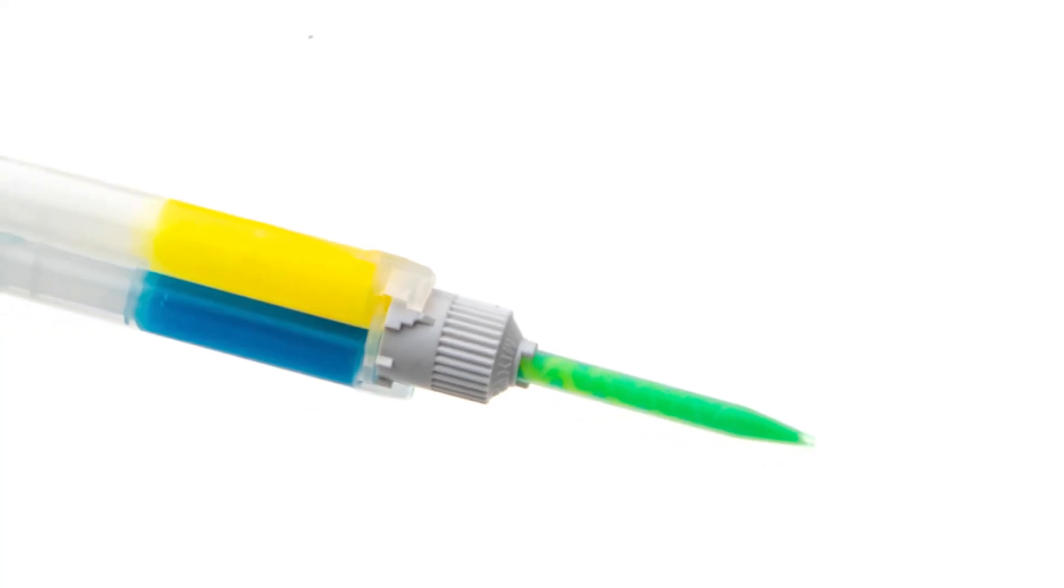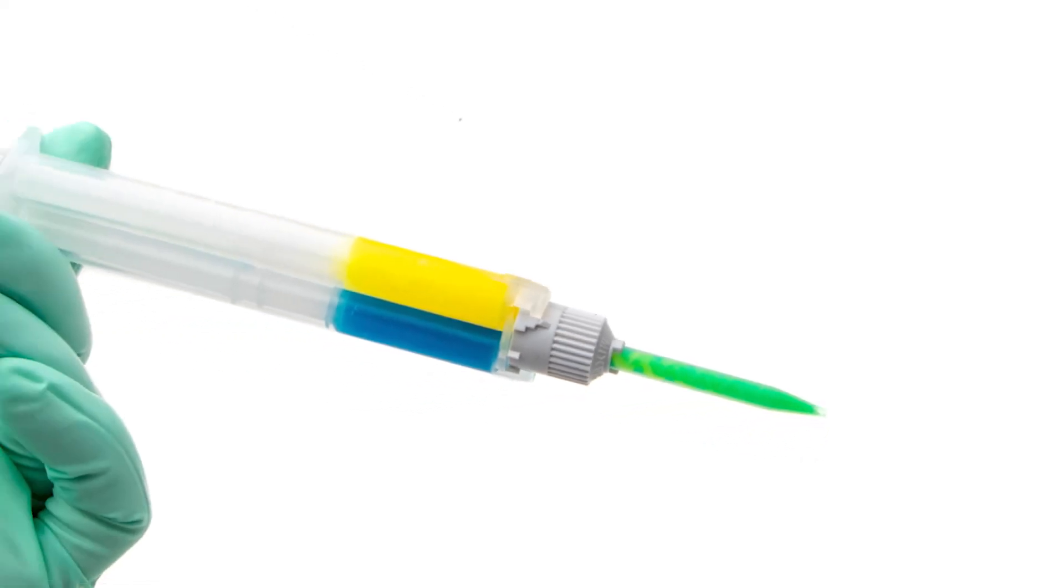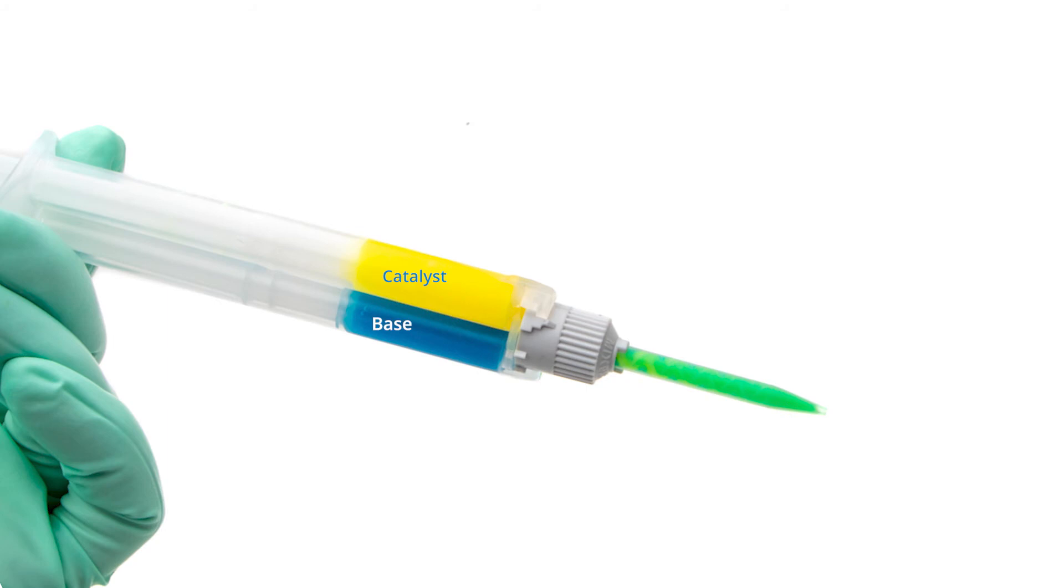Kwik-Cast is color-coded to make the mixing foolproof. The catalyst is yellow, the base is blue, and when uniformly mixed, it is green.